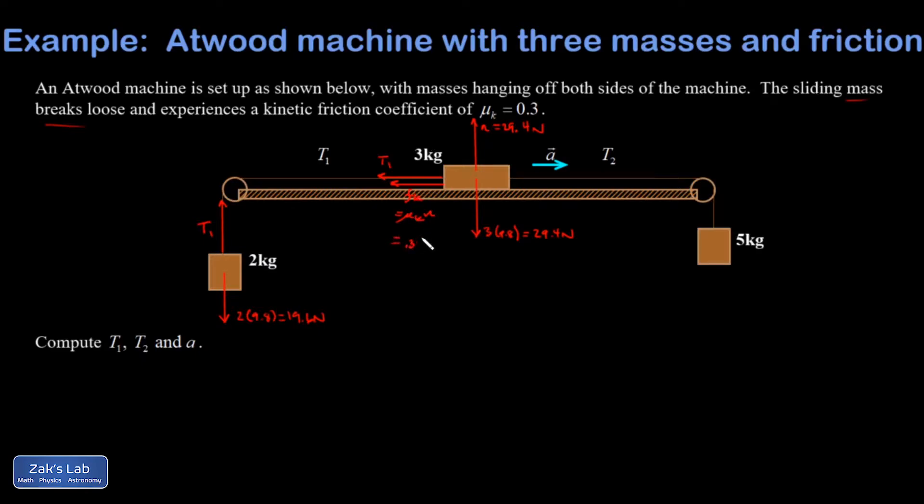So that's 0.3 times 29.4. There's no problem with putting numbers up in your force diagram as long as there's room for it. So I get 8.82 Newtons for the friction force.